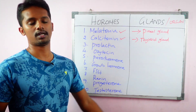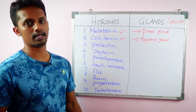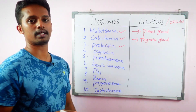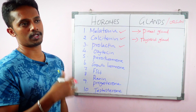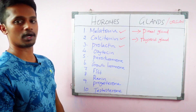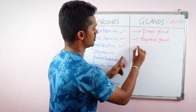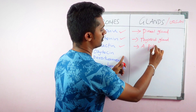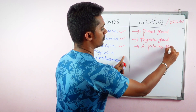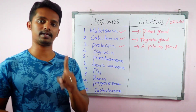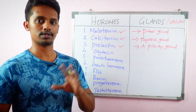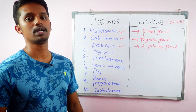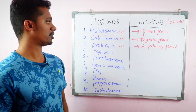Next, Prolactin. Prolactin is involved in milk secretion — it is a vital hormone for pregnant ladies, increasing secretion during pregnancy. The correct answer for where it is produced is the Anterior pituitary gland.